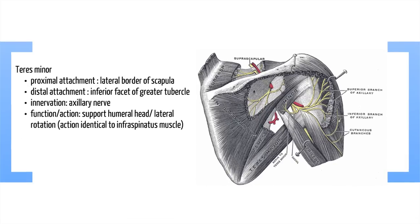Teres minor — its proximal attachment is the lateral border of the scapula, shown in this diagram. It's inserted into the inferior facet of the greater tubercle of the humerus. It's innervated by the axillary nerve. There are several branches of the axillary nerve in this diagram — you can see the superior branch, the inferior branch, and the cutaneous branches, with a small branch supplying the teres minor. Its function is to support the humeral head and lateral rotation, identical to the infraspinatus muscle.